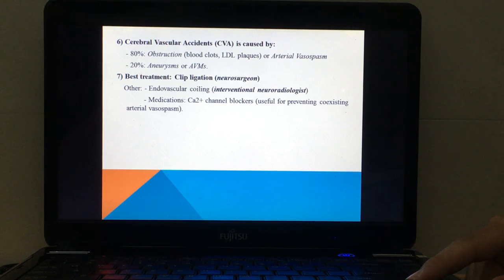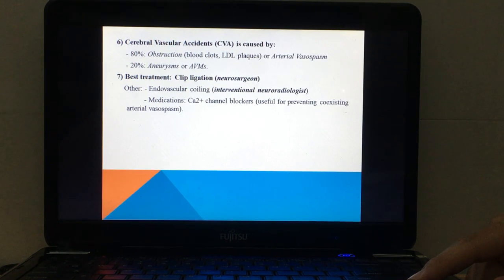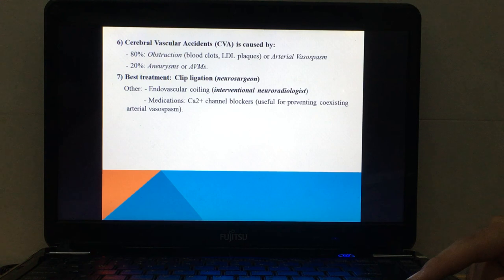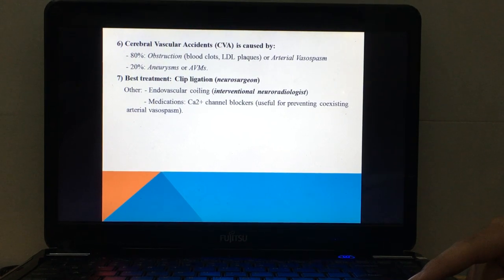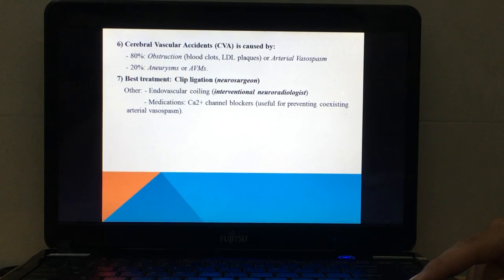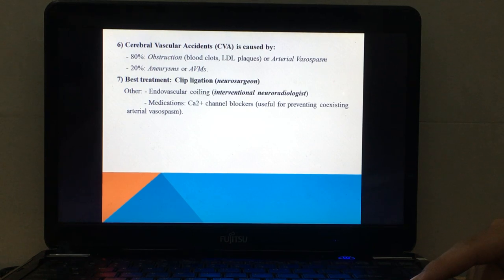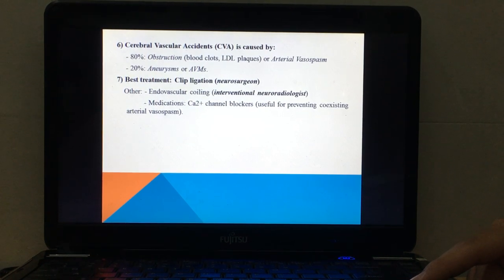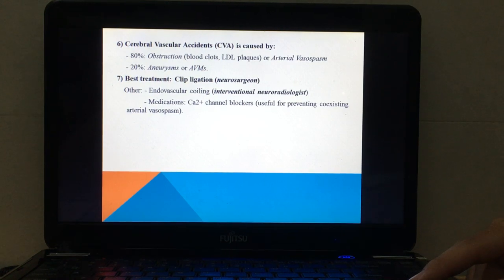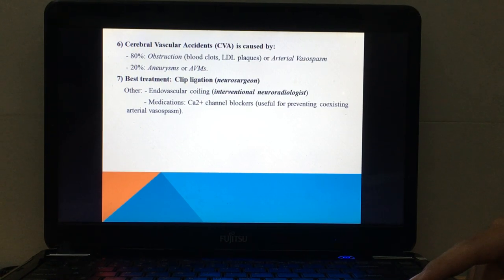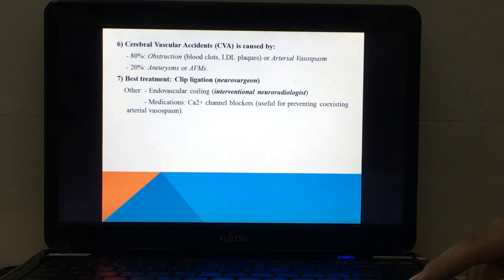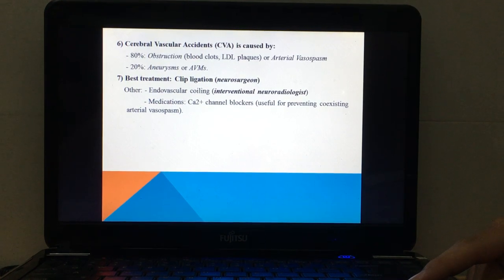The best treatment for this is clip ligation. It is usually performed by a neurosurgeon. Other treatments are endovascular coiling, usually done by an interventional neuroradiologist. We can use medication like calcium channel blockers. It is very useful for preventing coexisting arterial vasospasm.